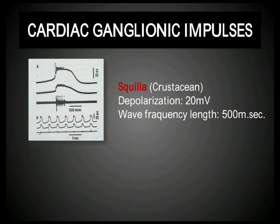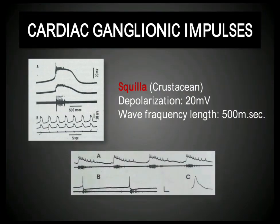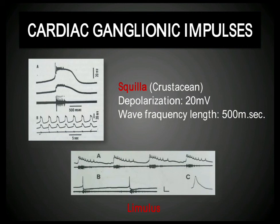This is another example of Limulus. The graphs of the heartbeats are shown, and if you zoom in, each single beat contains many smaller sub-curves. This means there is repeated re-depolarization reaching the top multiple times within a single beat — that is the type of graph seen in Limulus.